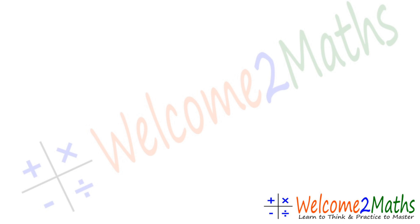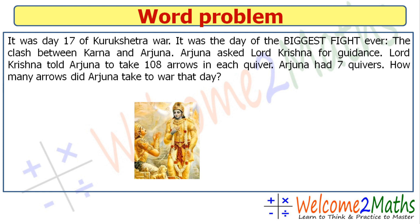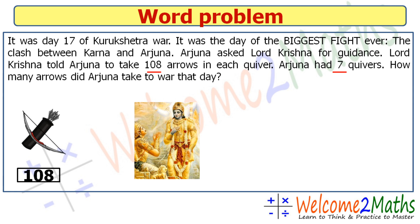Sometimes in our word problem there are lots of numbers, but all the numbers are not needed to solve it. In this word problem you can see there are three numbers: 17, 108, and 7. But the first number, 17, was just a day — it was day 17 of the Kurukshetra war — so 17 is not needed to solve this word problem. We omit 17.